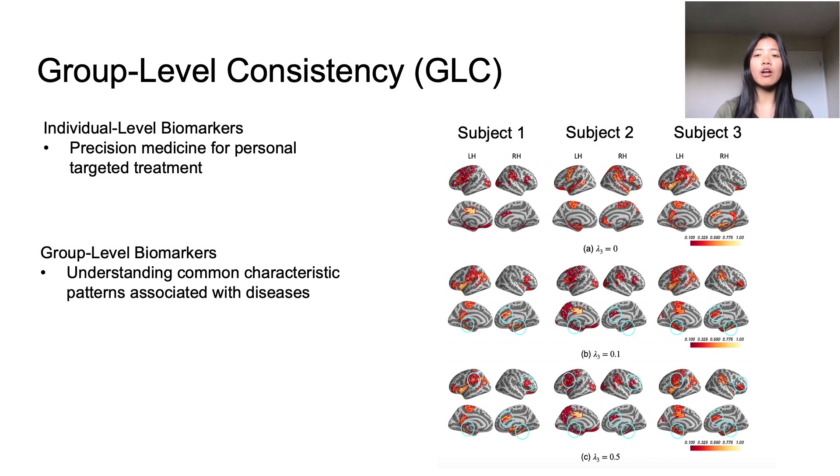However, for each row, they altered the lambda value that controls the GLC, where a higher lambda value correlates to higher group level consistency, and they circled the most commonly detected areas between all three individuals in light blue.